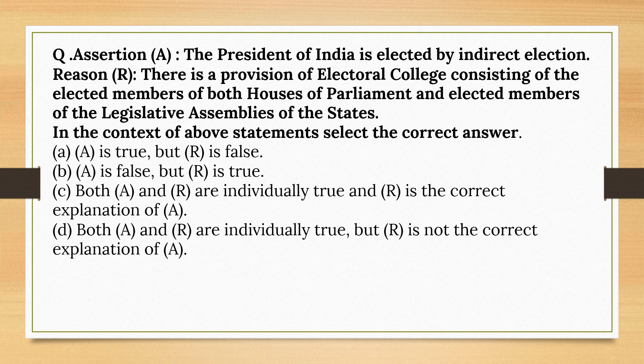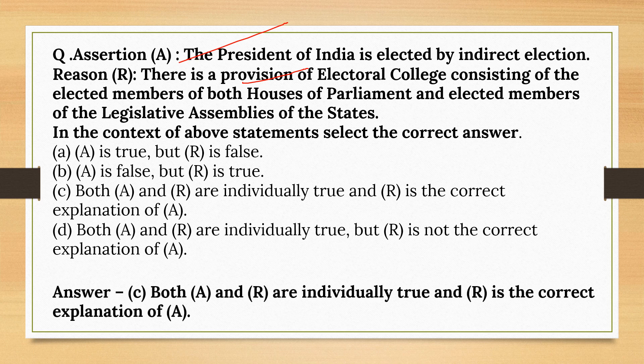Assertion and Reason: The President of India is elected by indirect election — correct. The reason is that there is a provision of an Electoral College consisting of the elected members of both houses of Parliament and the elected members of the Legislative Assemblies of the states — also correct and the correct explanation of Assertion. So the correct option is: both A and R are individually true and R is the correct explanation of A.